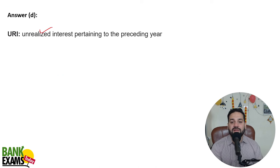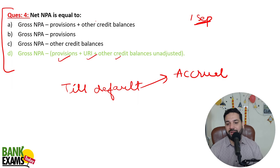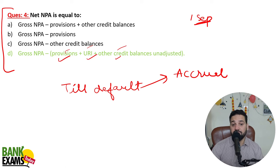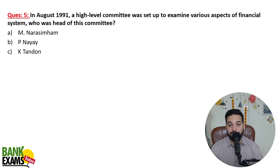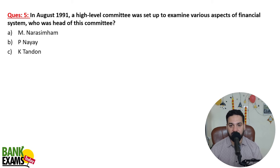URI — unrealized interest pertaining to the preceding year — must be deducted. Provisions, unrealized interest, and other unadjusted credit balances are deducted from gross NPA to arrive at net NPA.